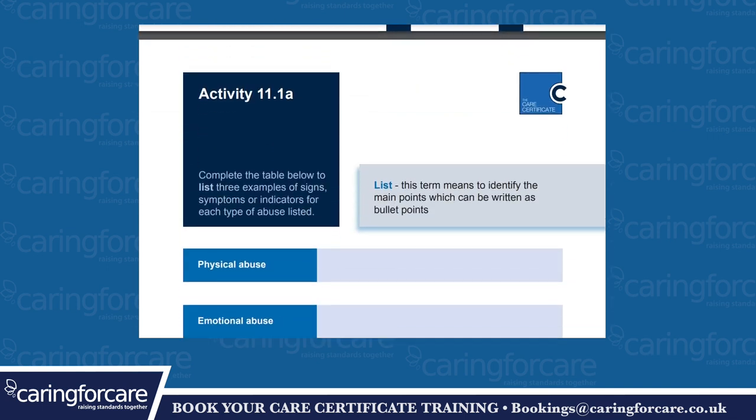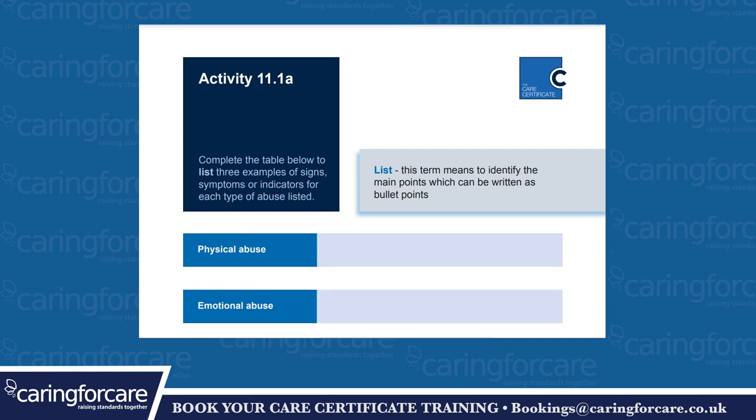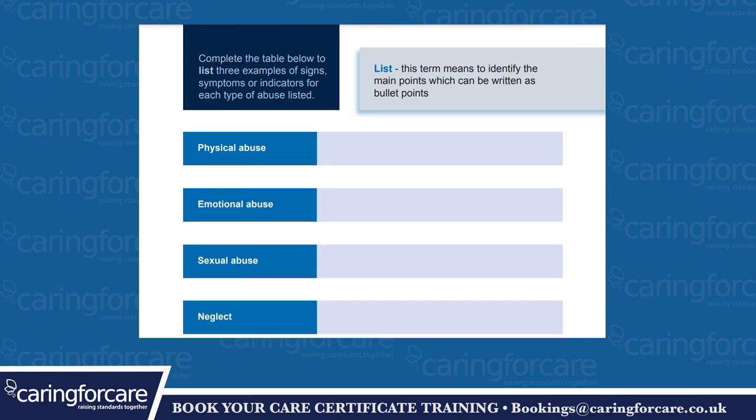Activity 11.1a. Complete the table below to list three examples of signs, symptoms, or indicators of each type of abuse listed. List — this term means to identify the main points, which can be written as bullet points.